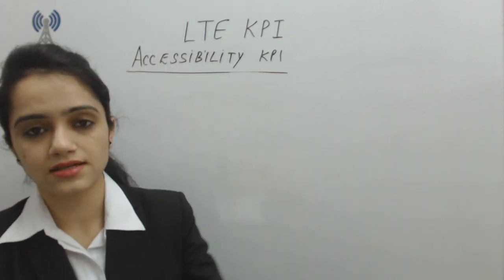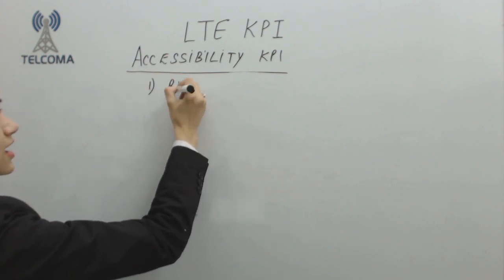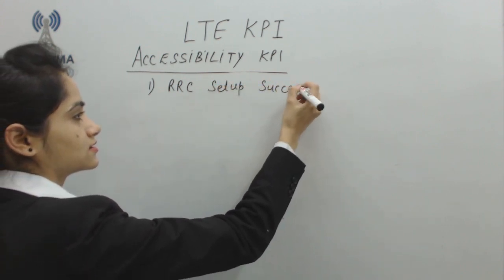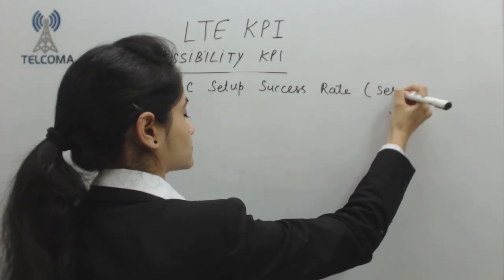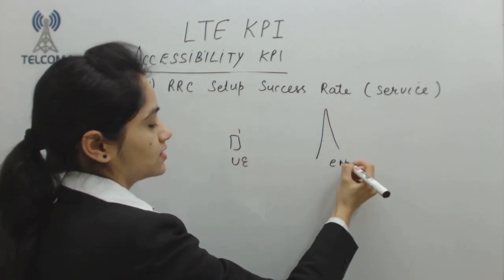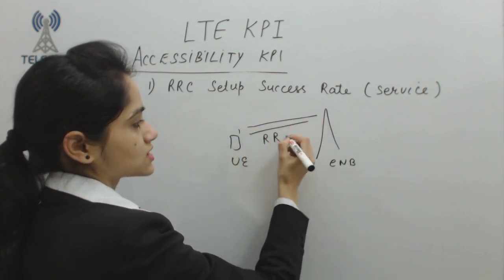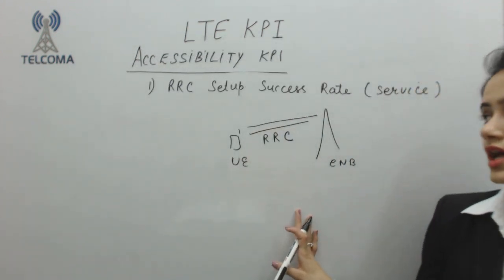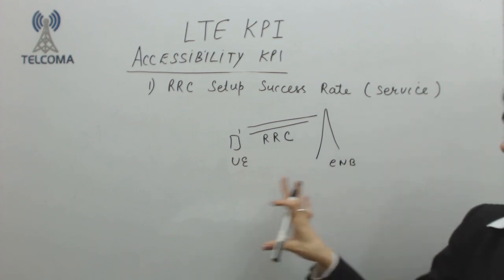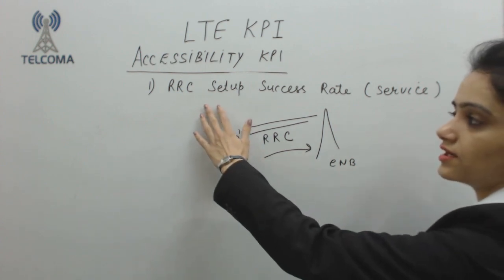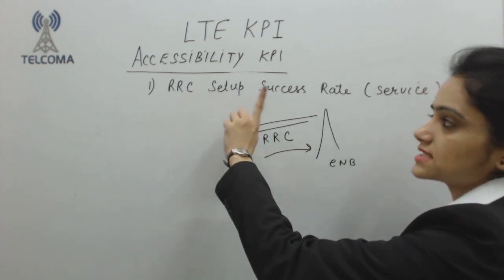The first KPI under Accessibility KPI is RRC Setup Success Rate for service. Whenever user equipment wants to communicate with the eNodeB, there is a setup of Radio Resource Control for each service or for signaling. When the RRC is fully established between the two ends, only then can the UE access the service. This makes RRC Setup Success Rate an important accessibility KPI.